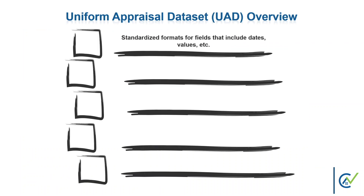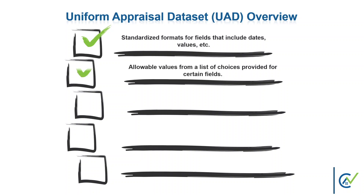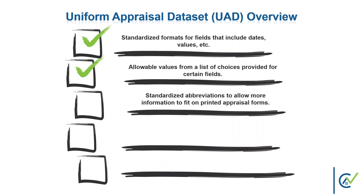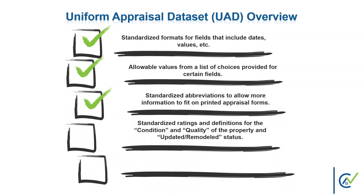The UAD standardizes the presentation of data for multiple appraisal form fields such as dates, values, quality of construction ratings, condition ratings, views, etc. The UAD allows for certain standard values, formats, and abbreviations within the report. It provides a list of allowable values for certain fields, and those choices are typically made available to the appraiser within their appraisal report form software. The UAD also provides standard abbreviations to allow more information to be presented on what may be a field of limited size, as well as definitions and descriptions for the various quality and condition ratings for properties.